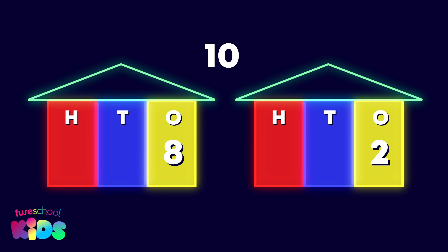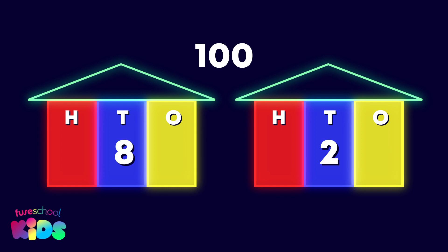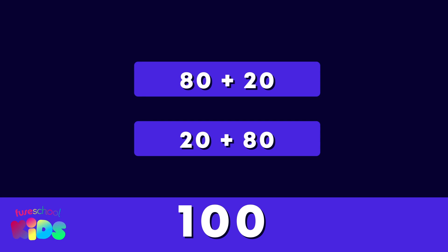Here is another number pair that adds to ten: eight and two are moving to the tens place. We now have eight tens and two tens. We add our placeholders. Eighty plus twenty equals one hundred, and twenty plus eighty equals one hundred.